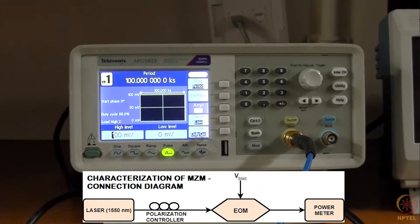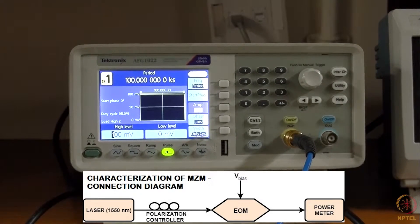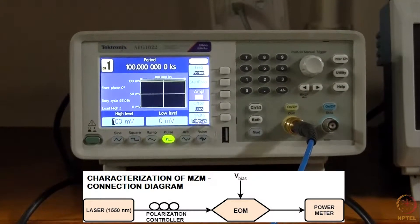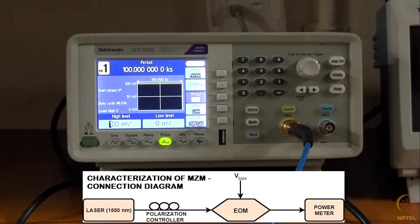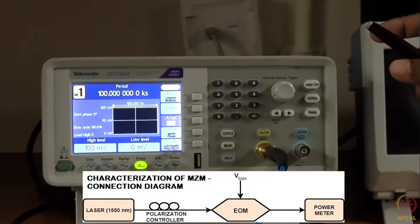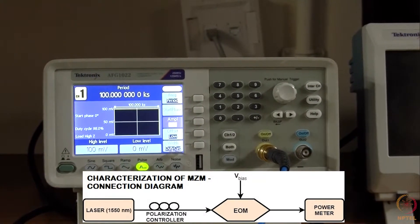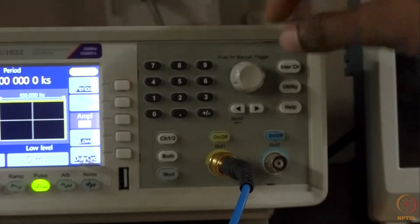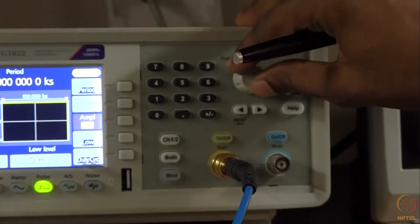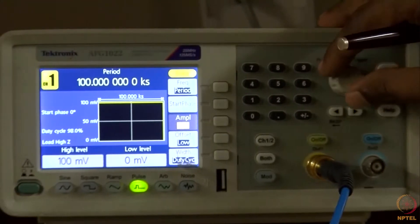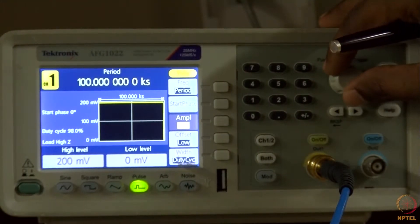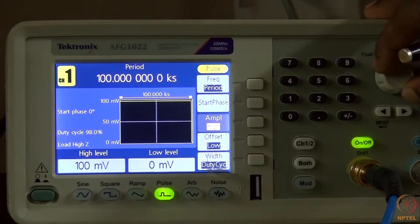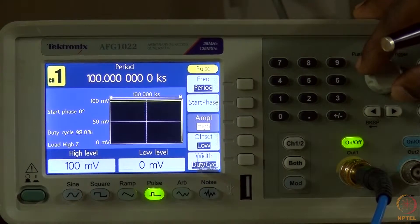For characterizing this electro-optic modulator, I made the connections as shown in the inset. I have a signal generator where I can vary the voltage bias given to the Mach-Zehnder modulator. The signal generator is configured so I can increment the voltage in steps of 100 millivolts — 100, 200, and so on — even up to 7 or 5 volts.